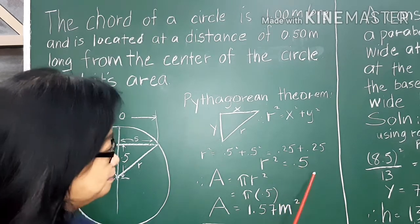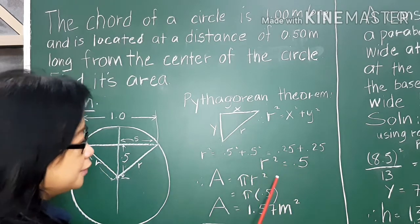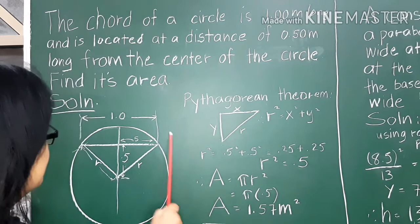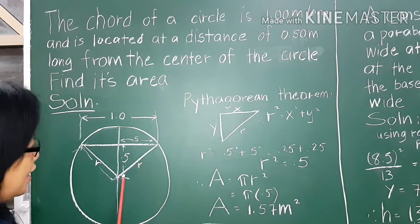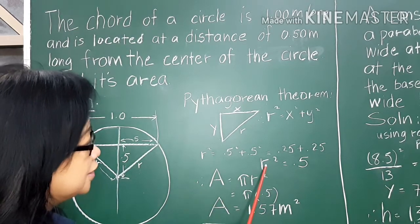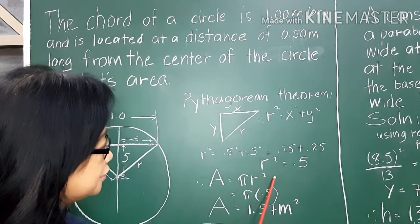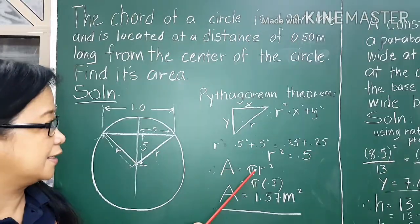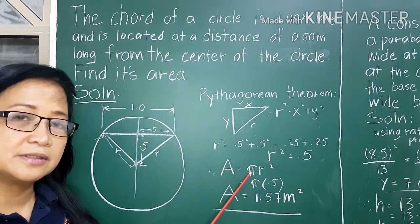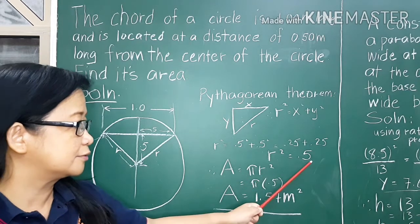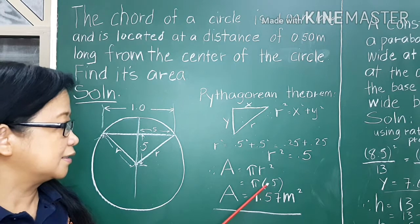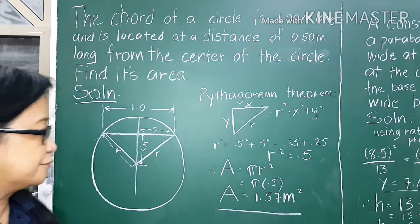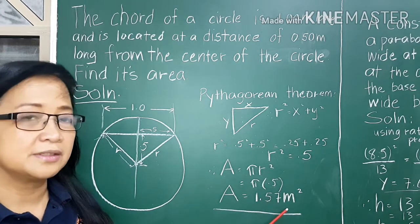r squared equals 0.5. Now we can solve the area of the circle. Since r squared is already solved, there is no need to re-square r — just use the value directly. Area equals pi times r squared, and pi is 3.14, and r squared is 0.5. Therefore the area of the circle is 1.57 square meters.